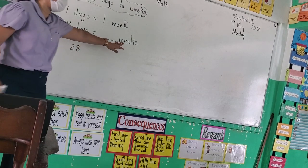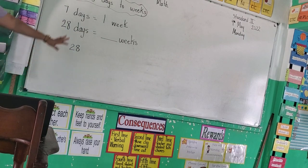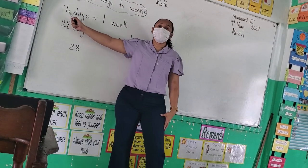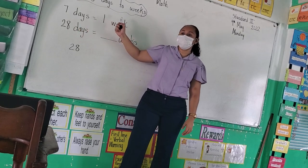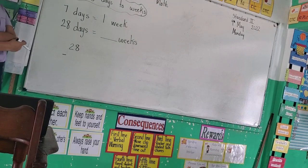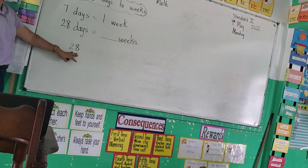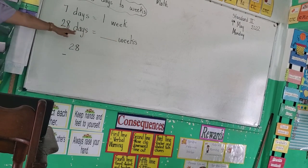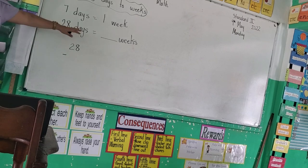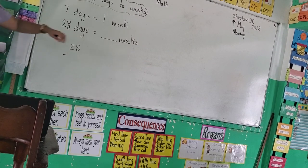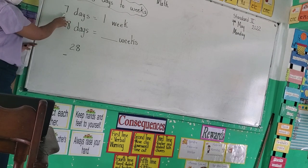Now we want to know how many weeks she went. Using subtraction, we need to use what we know. What do we know? We know that seven days equals one week. So if I want to know how many weeks, what will I subtract from the 28? Do I subtract one week? Remember, this is 28 days, not 28 weeks. So what will I subtract? Seven.